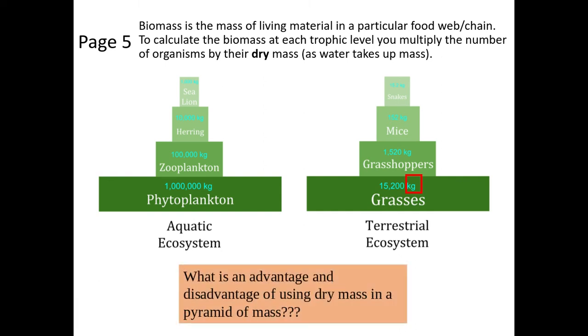There are advantages and disadvantages of using dry mass within a pyramid of mass. If we're using dry mass, obviously because we're removing the water content, this is an advantage because it allows comparisons to be made between different organisms. Different organisms will have different water content, which will in turn affect the whole biomass. If we remove the effect of water, we can compare a lot more realistically and reliably between the different species.